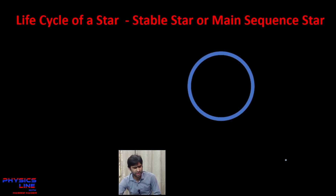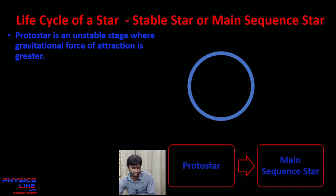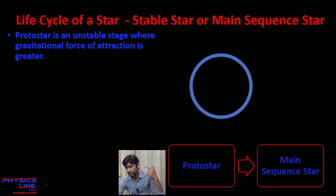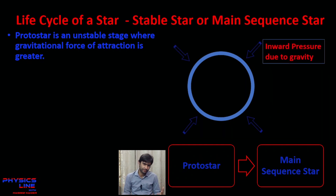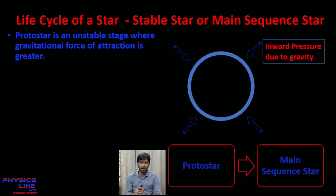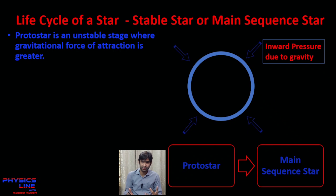This protostar is very unstable because gravity keeps shrinking it further. To achieve stability, the collisions produce thermal energy that initiates a nuclear fusion reaction. Nuclear fusion cannot occur at normal temperatures — it requires higher temperatures and high pressure. That high pressure comes from the gravitational force pulling particles together.